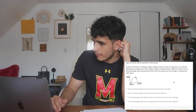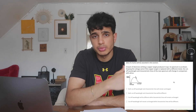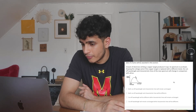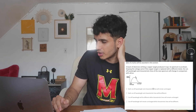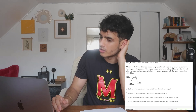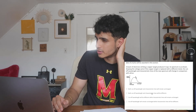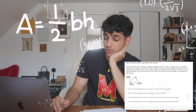A beam of electrons striking a copper target produces X-rays, with the spectrum as shown. Keeping the voltage the same, if the copper target is replaced with a different metal, the cutoff wavelength and characteristic lines — how will the new spectrum change? If I remember from 11th grade, the wavelength will definitely change. The characteristic lines will be different as well because a different metal is a different conductor.